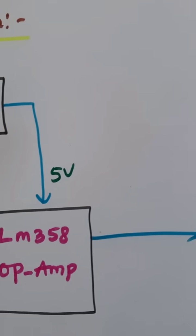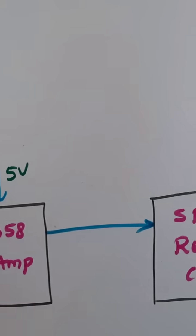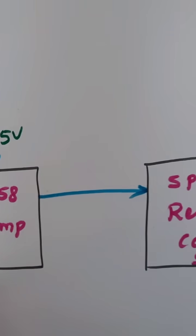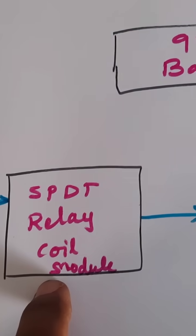Here we are using 9V power supply and convert to 5V regulator, soil moisture sensor, LM358 operational amplifier, and SPDT relay coil.